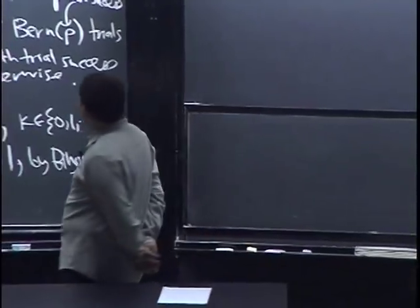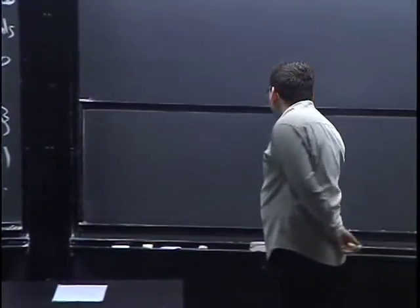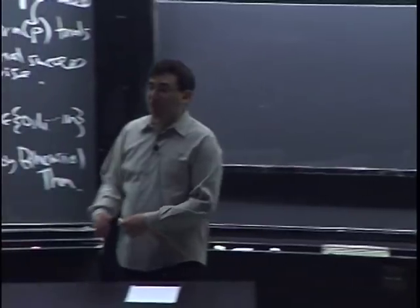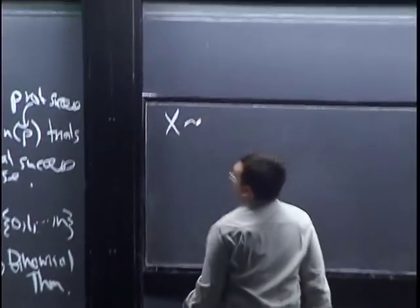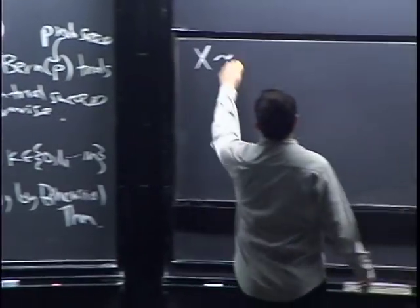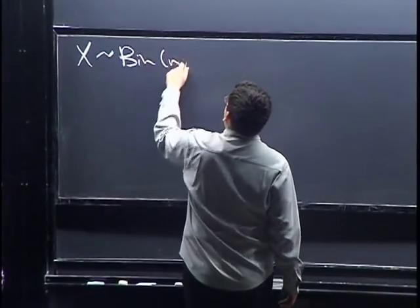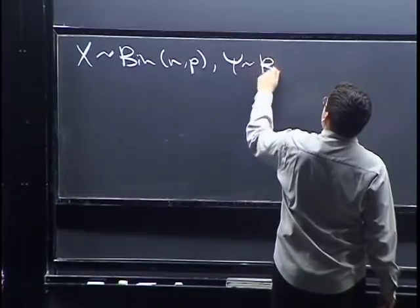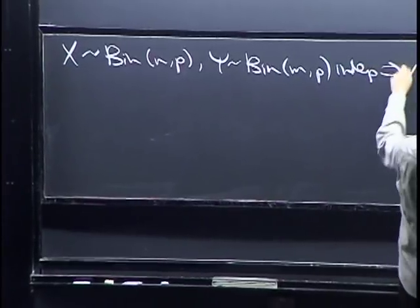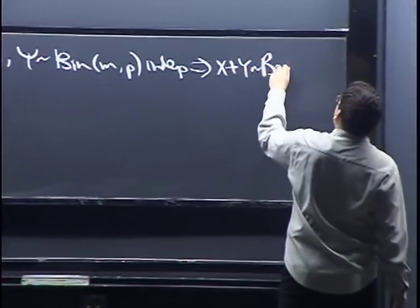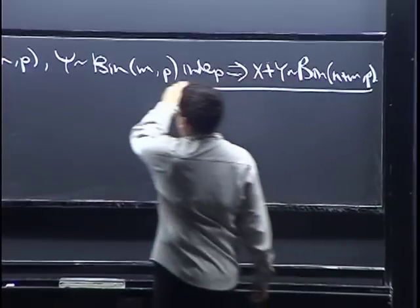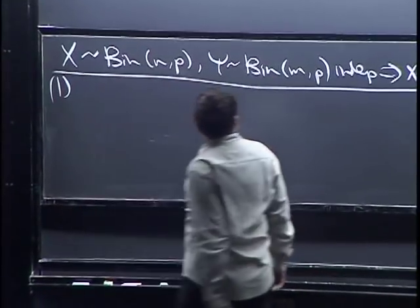Now let me come back to the sum of two binomials. If X is Binomial(N, P) and Y is Binomial(M, P) and they're independent, we want to show that X plus Y is Binomial(N plus M, P). I want to show you different ways of seeing this from all three perspectives.